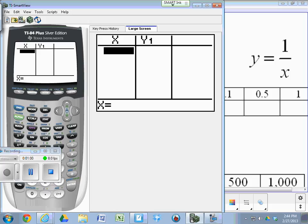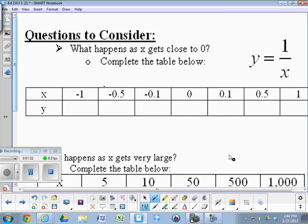I'm asking you on this chart on your note sheet to plug in negative 1, negative 0.5, negative 0.1, and so on. One of them might give you an error, and I want you to think about why.